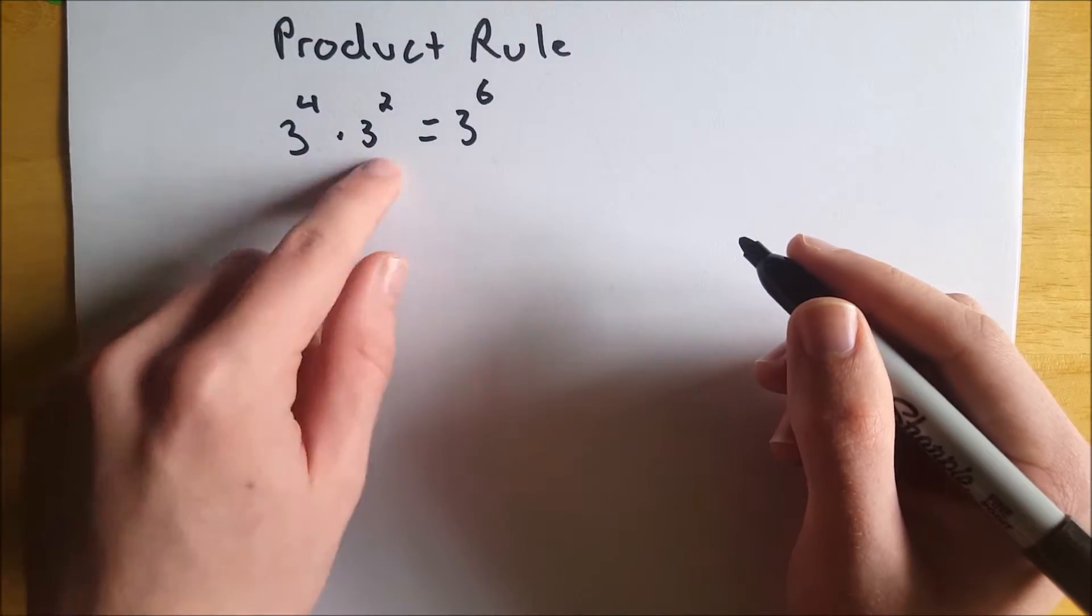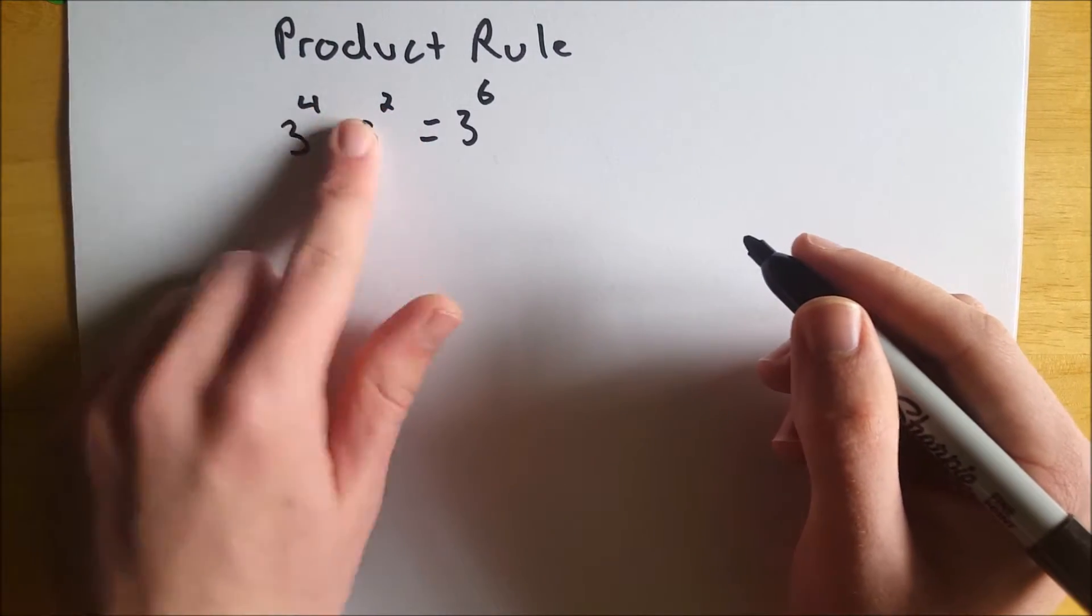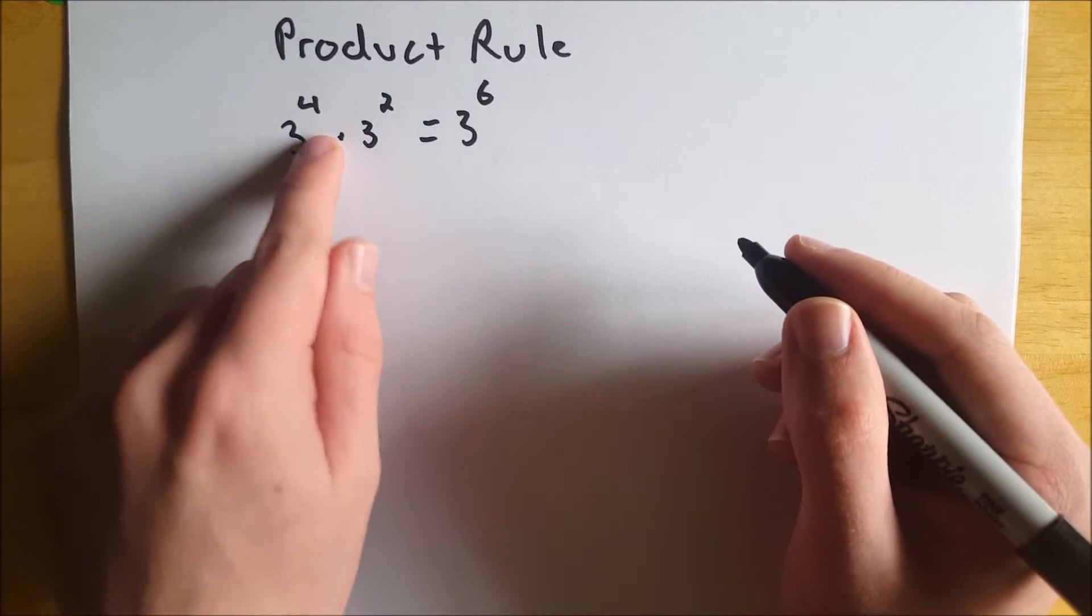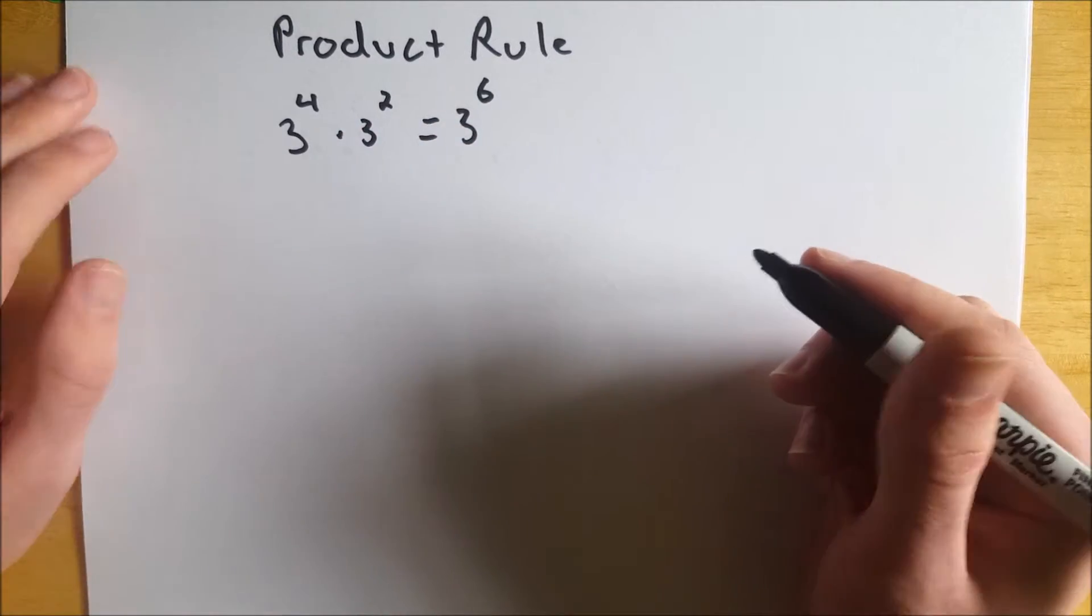We've got two numbers, we've got the same base, and they're raised to some power. Because we have the same base and they're being multiplied, all we have to do is add the exponents. But why is that?